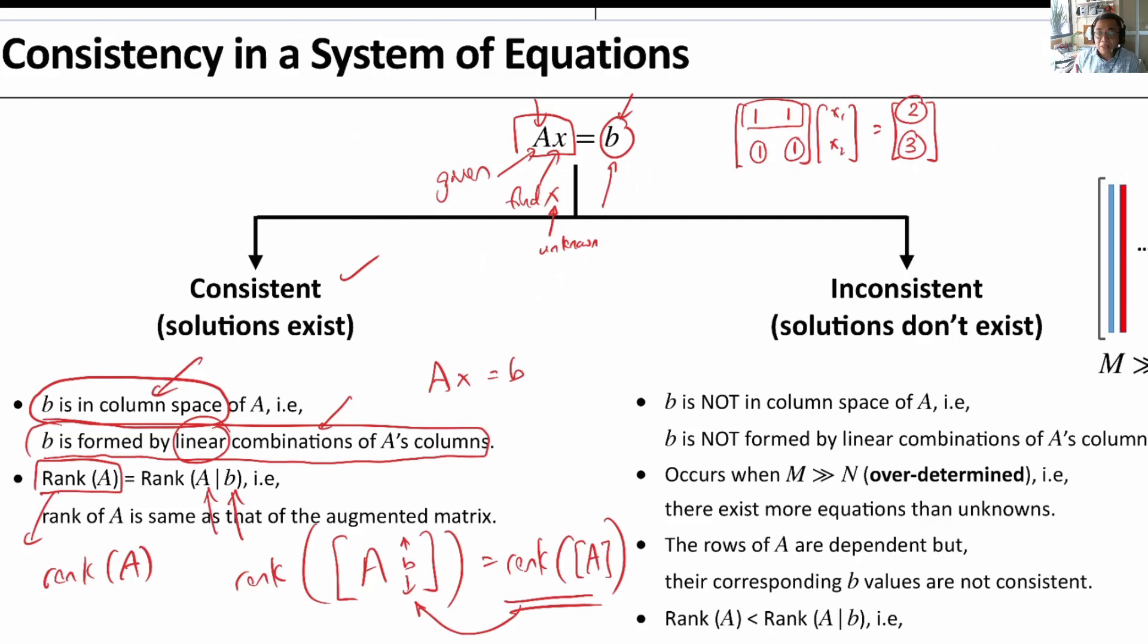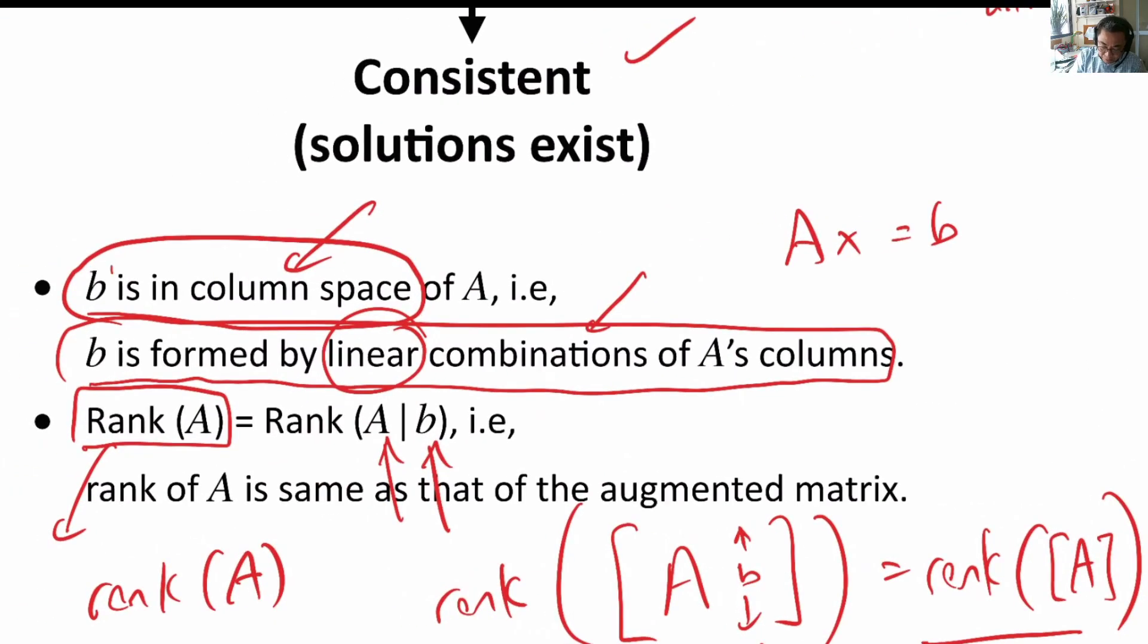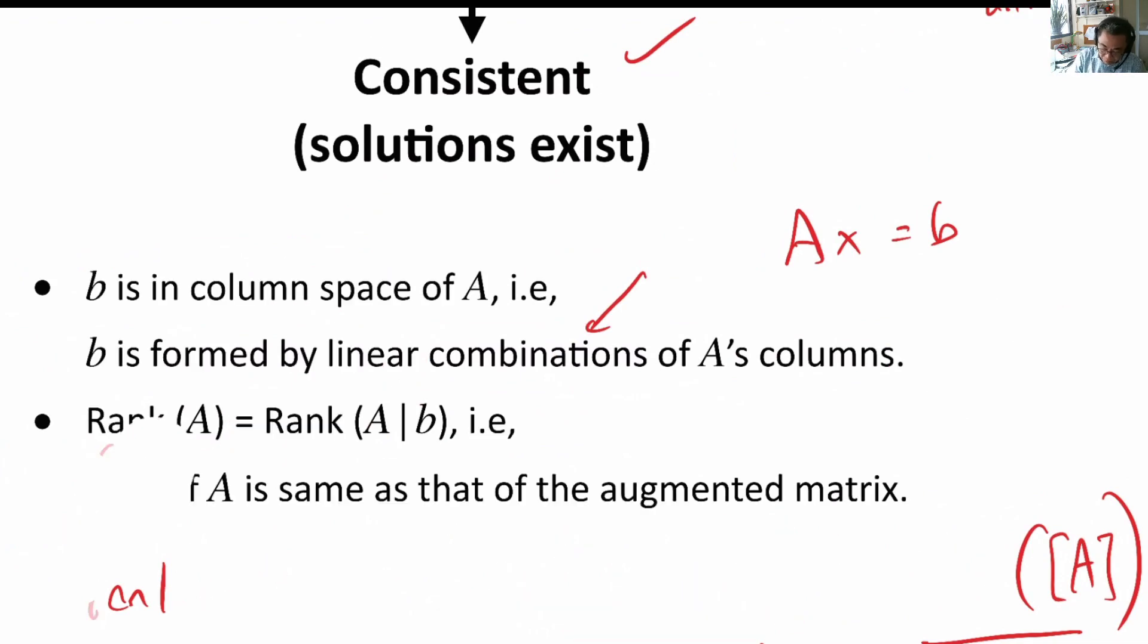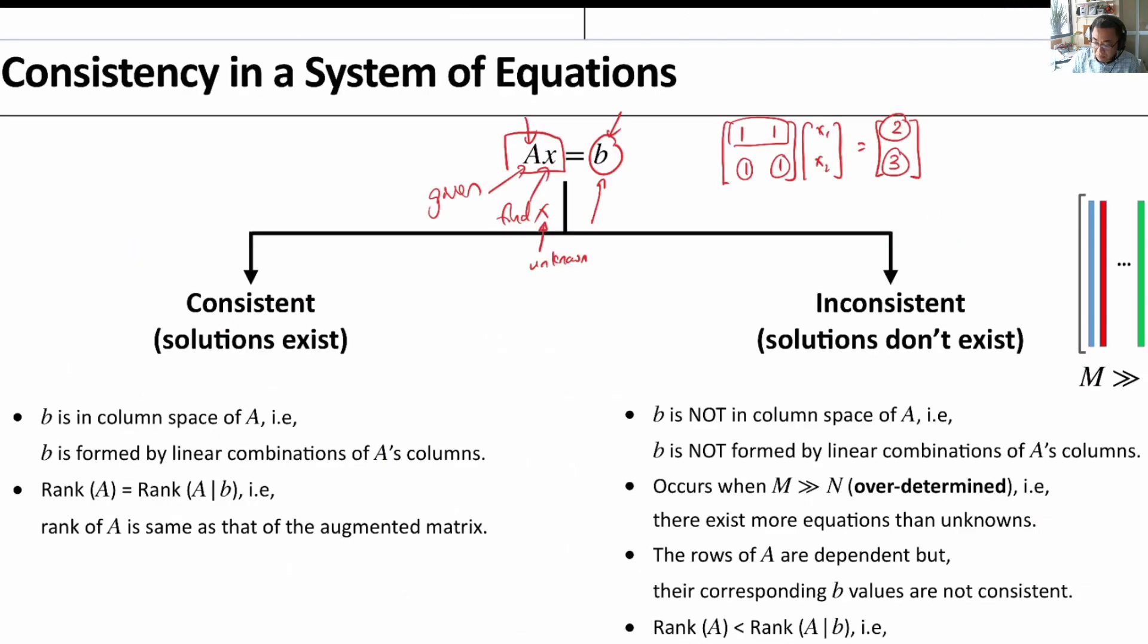And if its rank equals to A matrix, then basically, by adding one extra column of B, the rank did not change. And of course, this is telling us that the B is in the column space, that means B is in the column space of A.